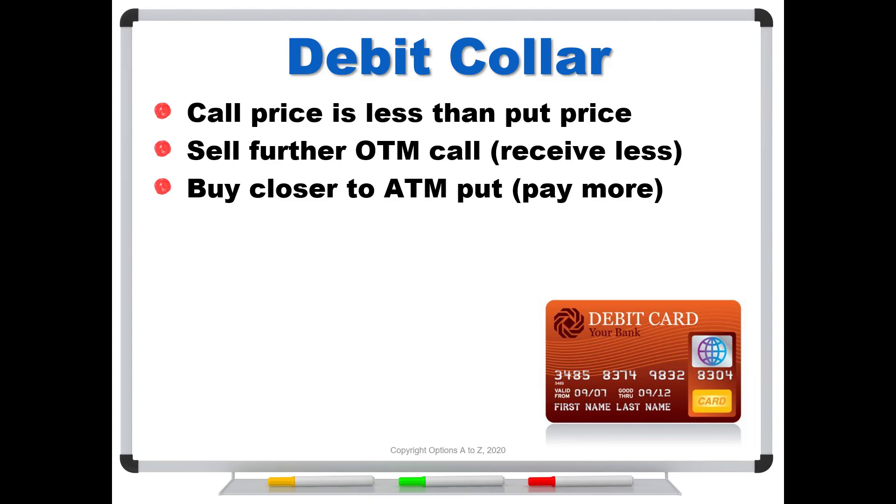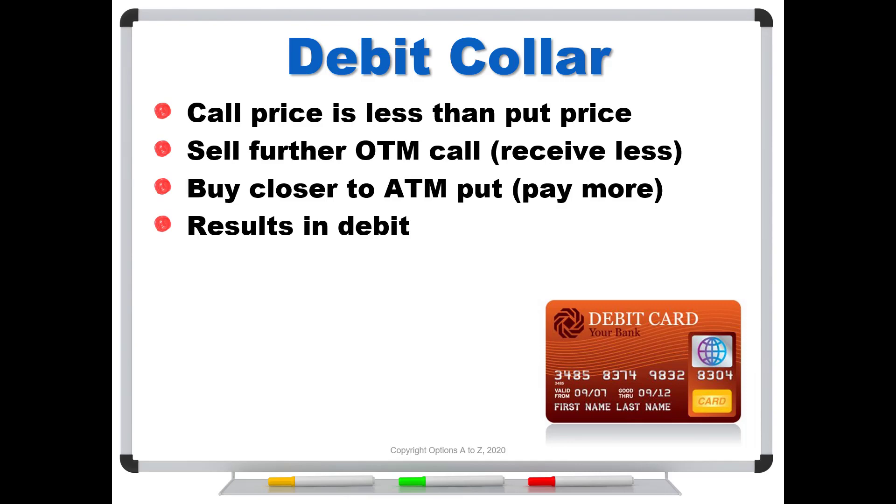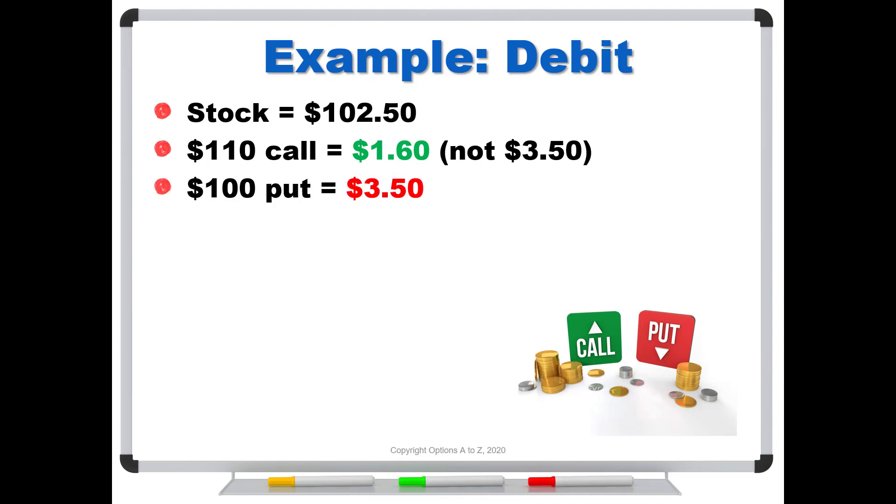Here's an example: our stock again is at $102.50, but now instead of selling the $105 call, I'm going to sell the $110 call. It's five dollars further out of the money, so the price is $1.60—not $3.50 like before. I'm receiving less. The $100 put still costs $3.50. On a net basis, I receive $1.60 and spend $3.50, so I can sell the call and buy the put for a $1.90 debit. I have to pay for that.